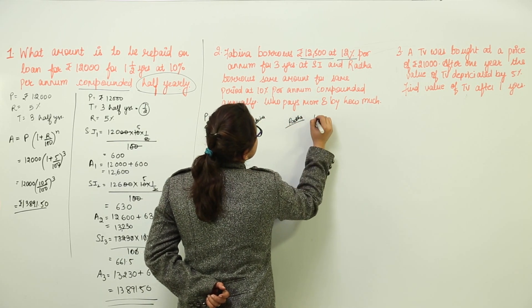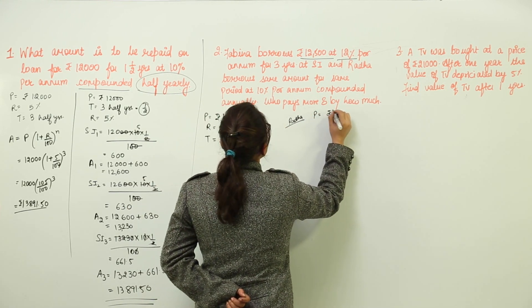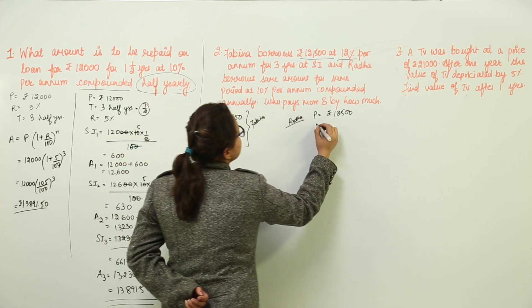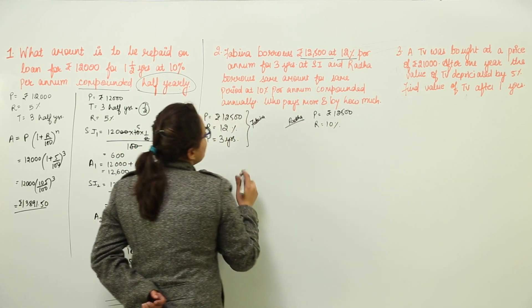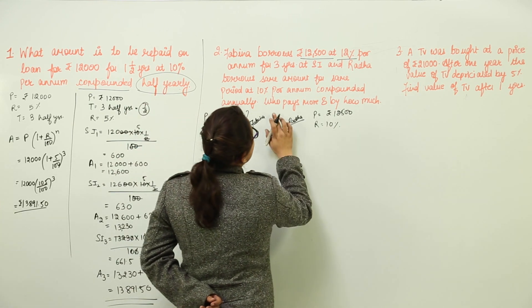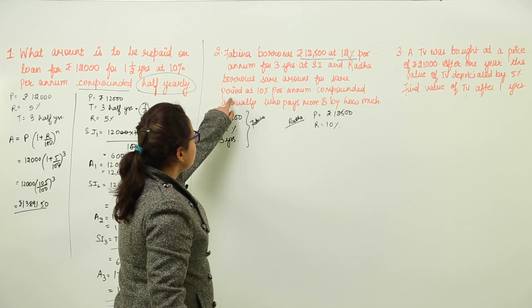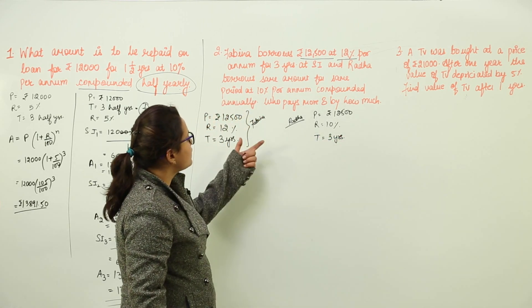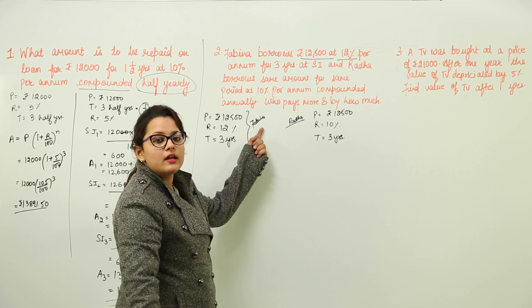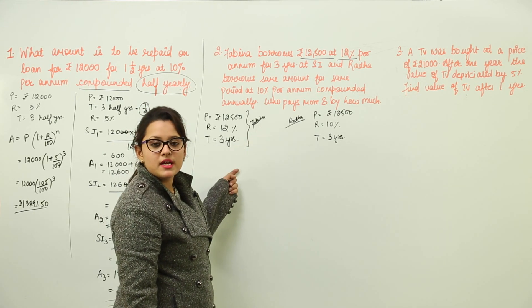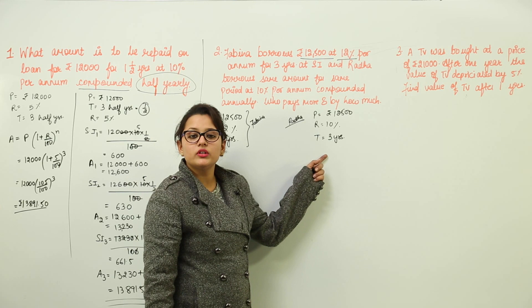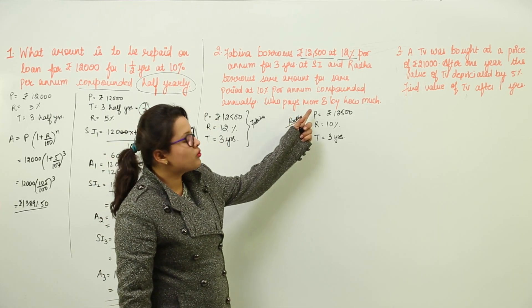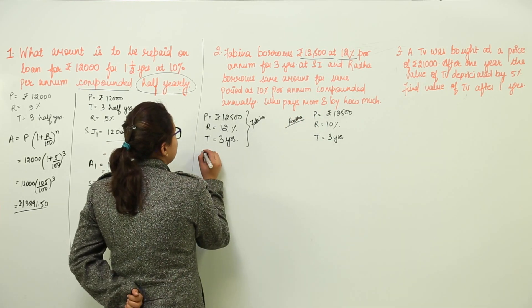And Radha borrows the same amount for same period at 10% per annum. For Radha, the principal is going to remain the same, that is Rs. 12,500. The rate of interest has changed to 10% compounded annually. The time period is also going to remain the same, that is 3 years. For Fabina, the simple interest has been calculated. Whereas, for Radha, we calculate the compound interest. We have to check who pays more and by how much.